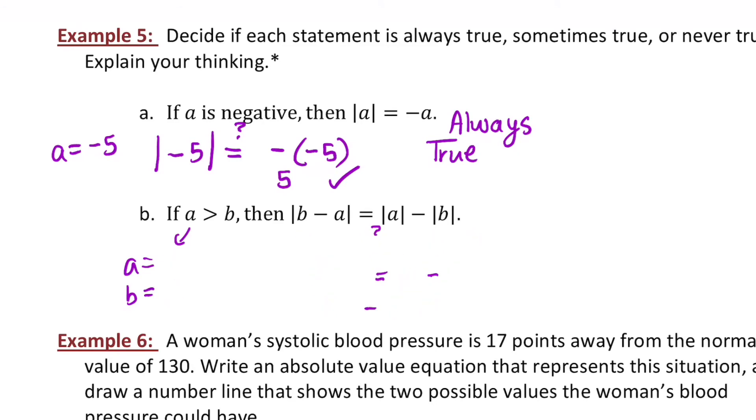But again, one case doesn't necessarily prove that this is true for every number. So let's try a different variety of numbers. Let's try some negatives. Let's say A is negative 1 and B is negative 3. Still meets my requirement. If I evaluate this expression with those in for B and A, I'm going to have absolute value of negative 3 minus negative 1, equal to the absolute value of negative 1 minus absolute value of negative 3. And if I evaluate those, I'm going to end up with absolute value of negative 2, equals 1 minus 3. I'm going to end up with 2 equals negative 2, which is not a true statement. So this statement is sometimes true, but not always.